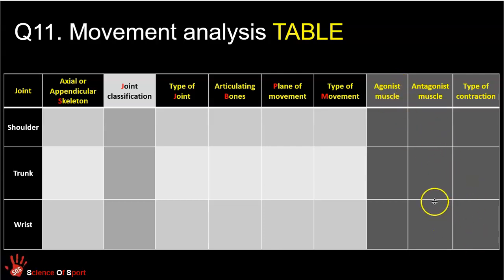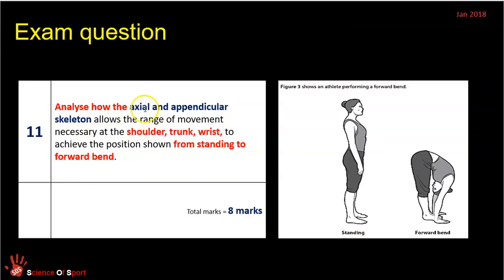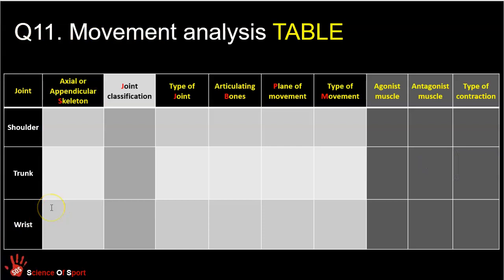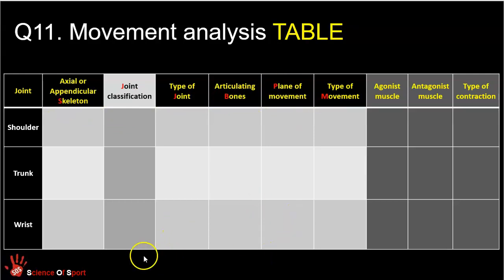Once you've interpreted your question and you know it's axial or appendicular, you know it's Question 11, and you know it wants these three joints, you can — as a plan, mentally or actually on your paper — know that you've got to complete this information. It's really good practice to remember this sort of format for preparing your answer. I've made red these letters: S for skeleton, J for joint, B for bones, P for plane, M for movement — and that's relevant to the acronym I'm going to show you.